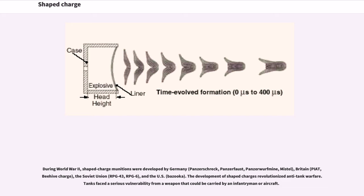During World War II, shaped charge munitions were developed by Germany (Panzerschreck, Panzerfaust, Panzerwurfmine, Mistel), Britain (PIAT, No. 68 Charge), the Soviet Union (RPG-43, RPG-6), and the U.S. (Bazooka). The development of shaped charges revolutionized anti-tank warfare. Tanks faced a serious vulnerability from a weapon that could be carried by an infantryman or aircraft.